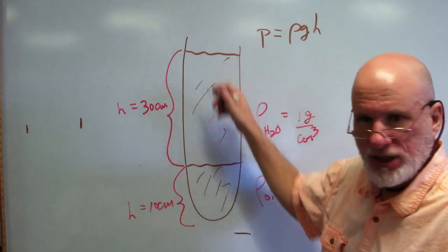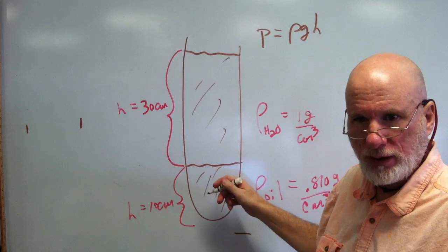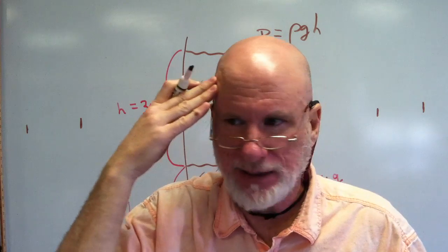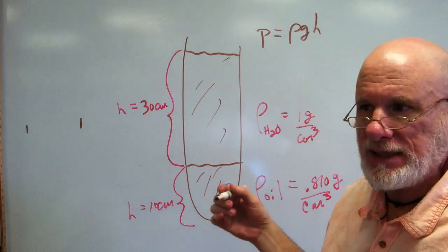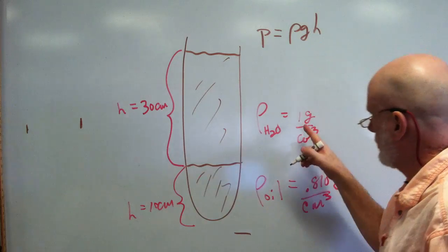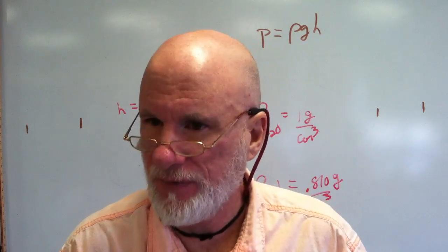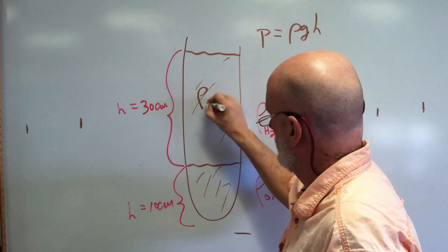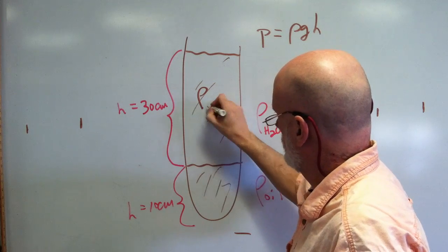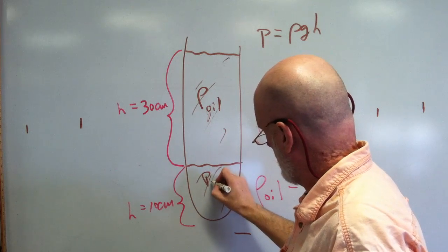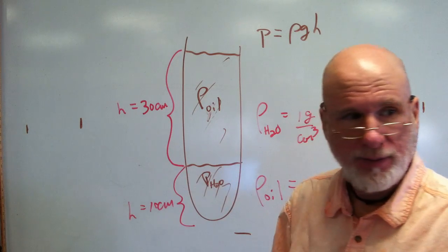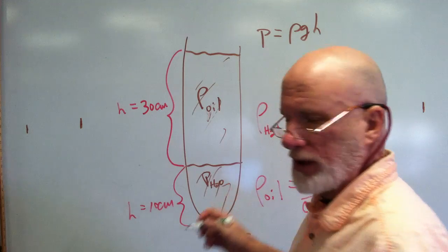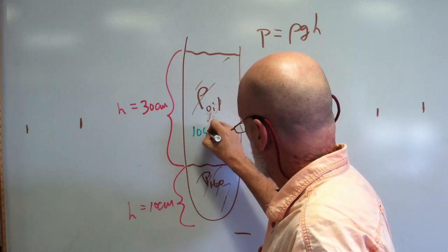Looking at the diagram, which layer is water and which is oil? Oil floats on water because it's less dense than water. The density of water is one gram per cubic centimeter. In standard metric units, that layer is oil and that layer is water.